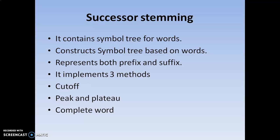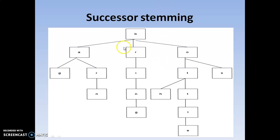The other variation of stemming is successor stemming. The main features of successor stemming are: it contains a symbol tree of words, it constructs a symbol tree based on words, it represents both prefix and suffix, and it implements three operations — cut off, peak, flat — and also the complete word operation. This tree has a root, intermediate nodes, and leaf items.